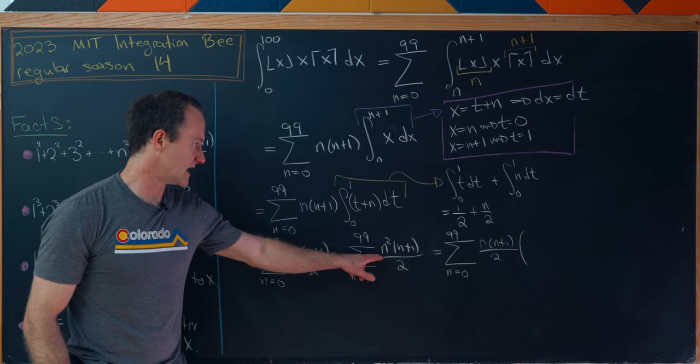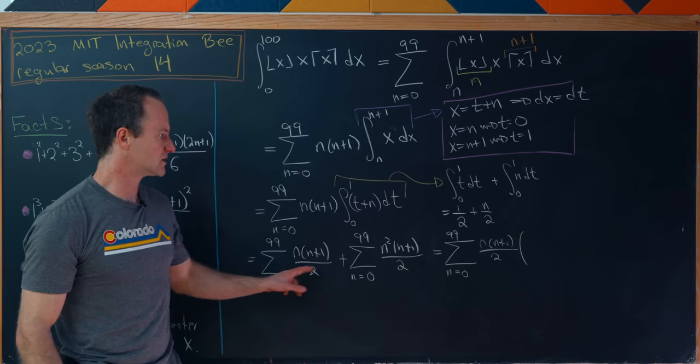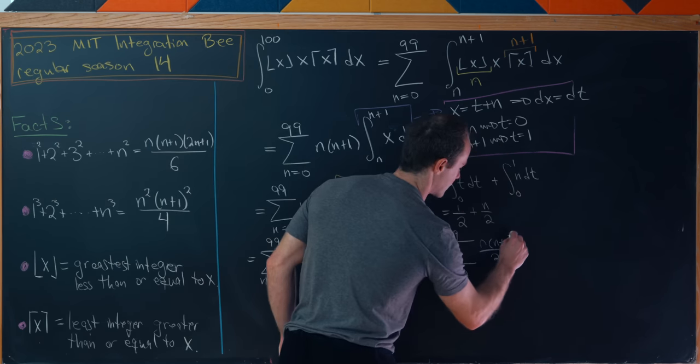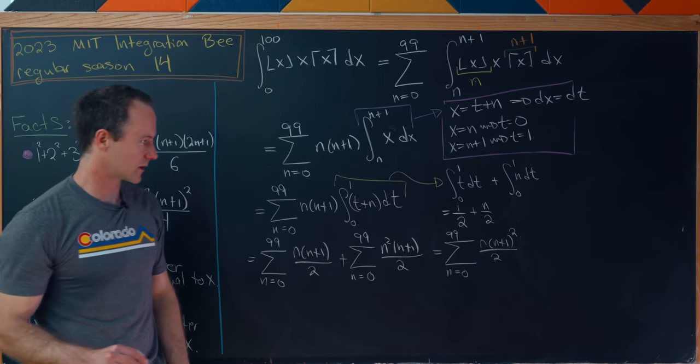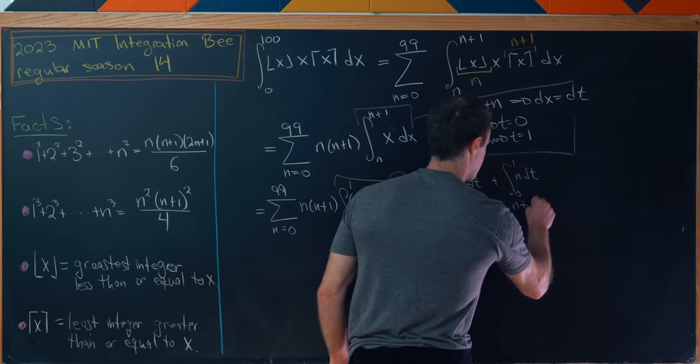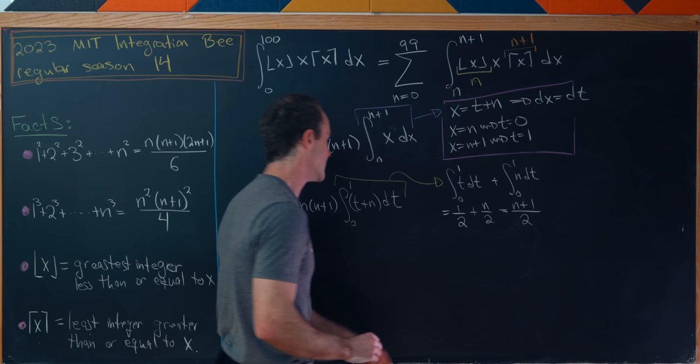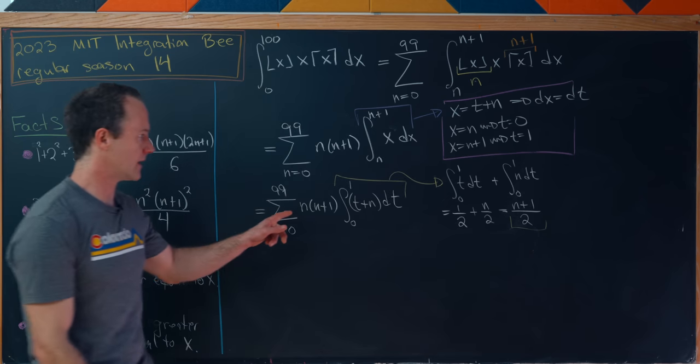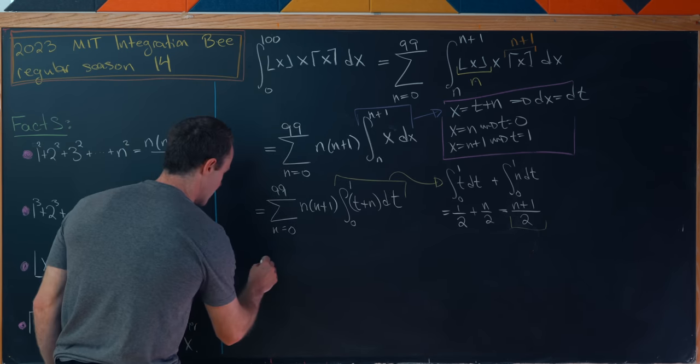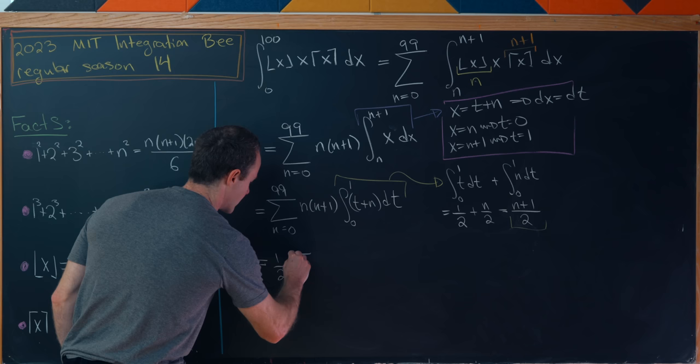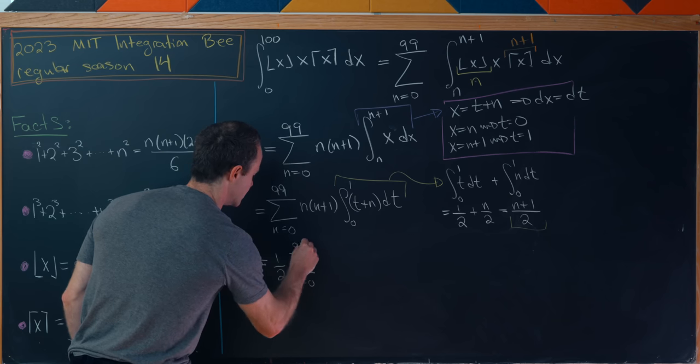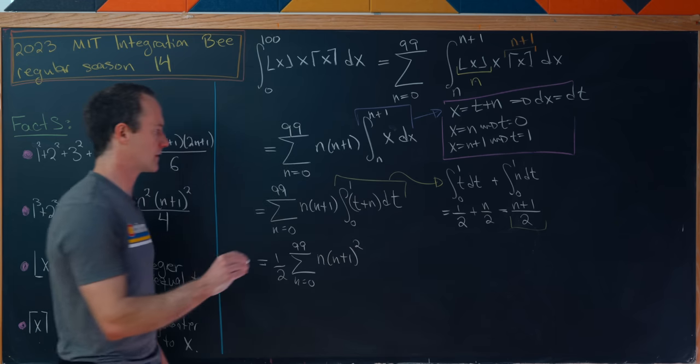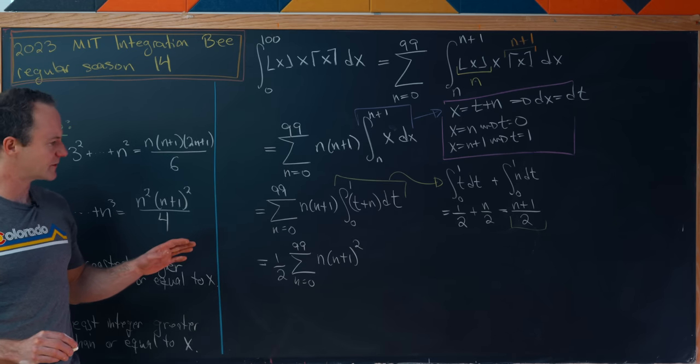That leaves us with the sum as n goes from 0 to 99 n times n plus 1 over 2. And then what's left here is an n, what's left here is a 1, so all in all what's left over is an n plus 1. So we might as well write that as n plus 1 squared. But now let's put those together into an n plus 1 over 2, and then we can insert that into this thing. That's going to combine with the n plus 1 that's already there. Let's bring the half out. And now we'll have the sum as n goes from 0 to 99 of n times n plus 1 squared.